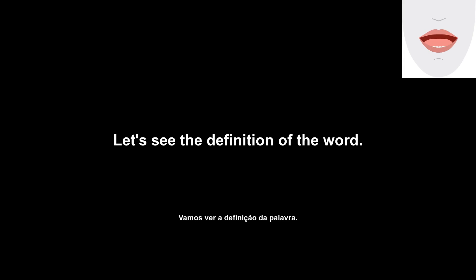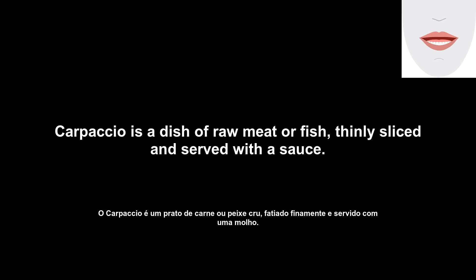Carpaccio. Let's see the definition of the word. Carpaccio is a dish of raw meat or fish, thinly sliced and served with a sauce.